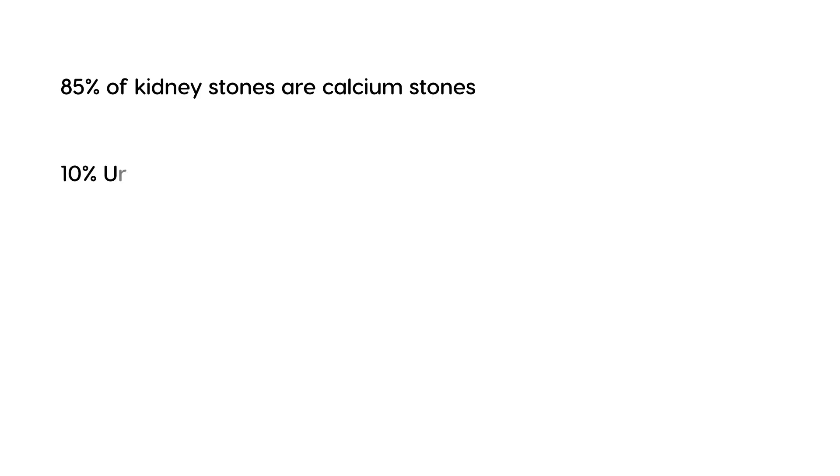10% are uric acid. Then you have a small percentage that are cysteine stones, and a very small percentage are known as struvite stones. Calcium is by far the most common.